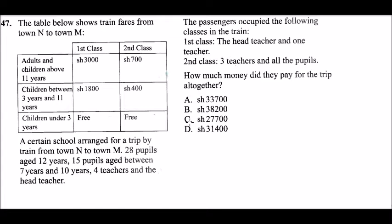A certain school arranged a trip by train from town N to town M. There were 28 pupils aged 12 years, 15 pupils aged between 7 and 10 years, four teachers, and the head teacher. The head teacher and one teacher occupied first class. Three teachers and all the pupils occupied second class.